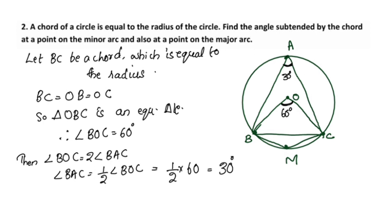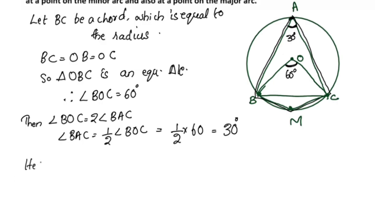In the major arc, we have a subtended angle. Points A, B, M, C form a cyclic quadrilateral ABMC. Now we move to the second step: ABMC is a cyclic quadrilateral.